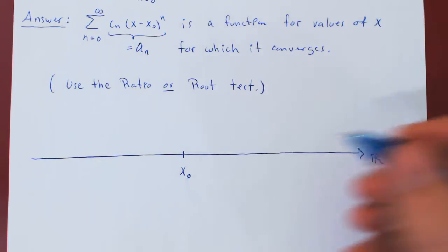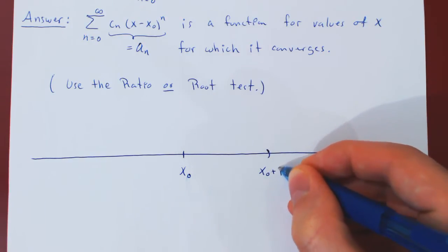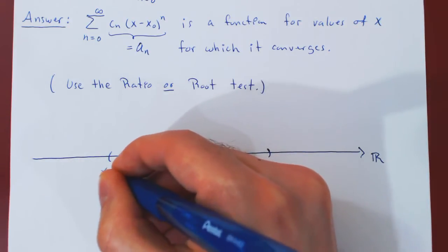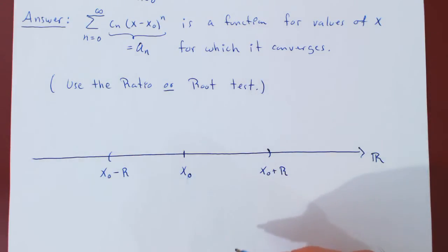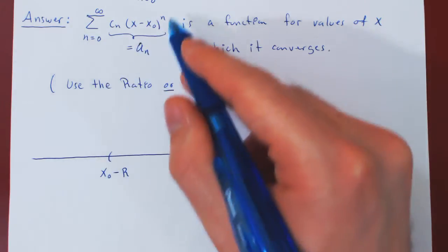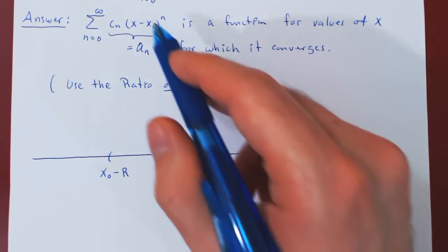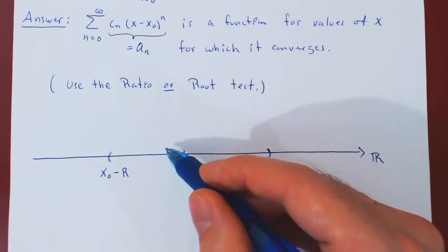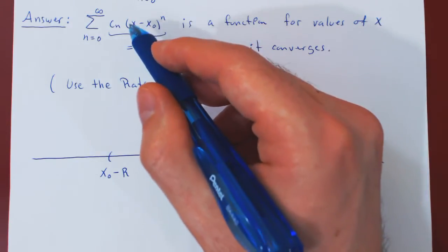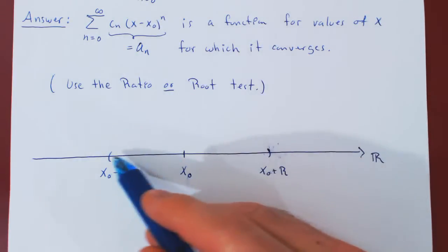We call this distance r. Suppose you can go up to x₀ plus r to the right and x₀ minus r to the left. On this open interval, the power series will converge, and therefore will return a function. For every value of x chosen inside this interval, plugging it into the series will cause it to converge and return some real number, therefore giving you a function on the open interval.